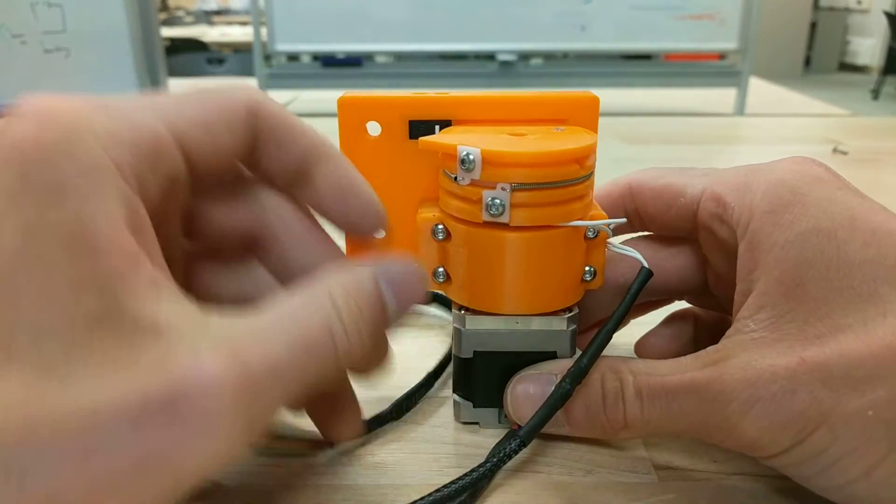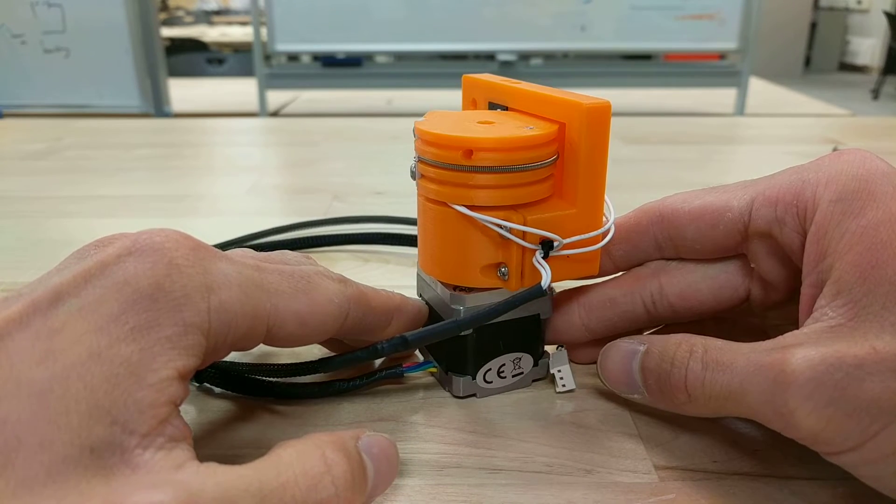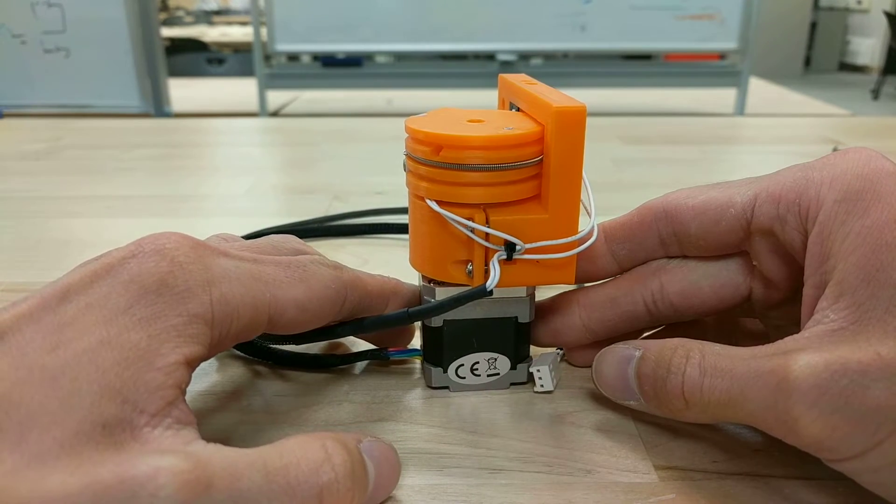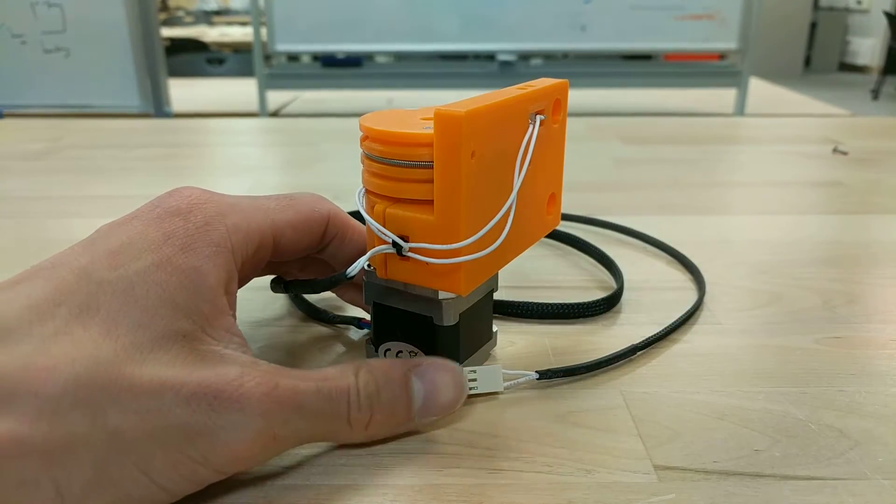Okay so this is the locking mechanism for the new tool changer. This is an all mechanical solution that is intended to lock down tools with a consistent amount of torque. So let me talk about how this works.